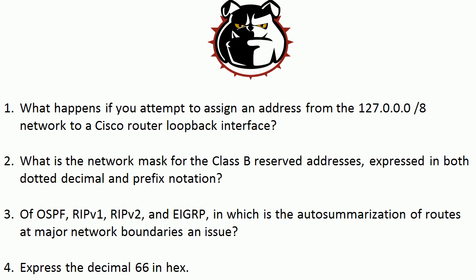Finally, expressing the decimal 66 in hex — we know this is lower than 256. So we're looking at how many units of 16 we have and how many units of 1 we have. How many 16s are in 66? Four of them — 4 times 16 gives us 64. So the first digit is 4 — four units of 16. That leaves 2 remaining, so the hex value is 42. It's 4 units of 16, which is 64, plus 2 units of 1, which is 2. Add them up and you get 66.